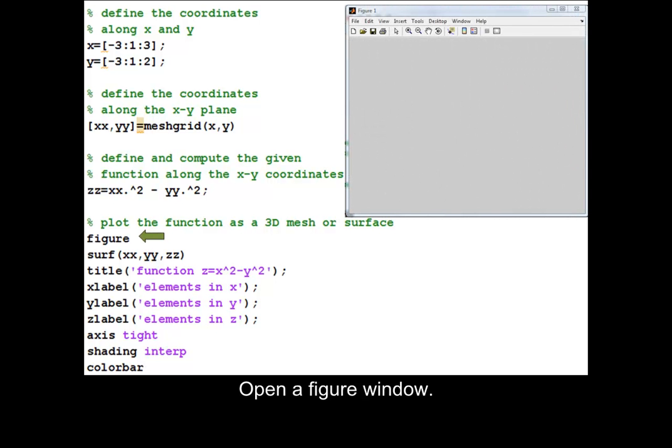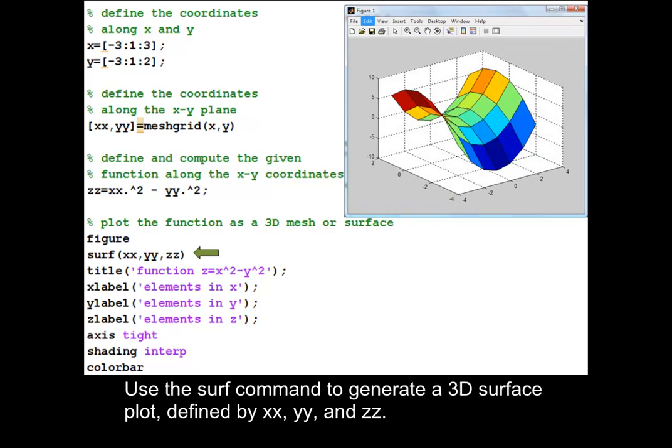Open a figure window. Use the surf command to generate a 3D surface plot defined by xx, yy, and zz.